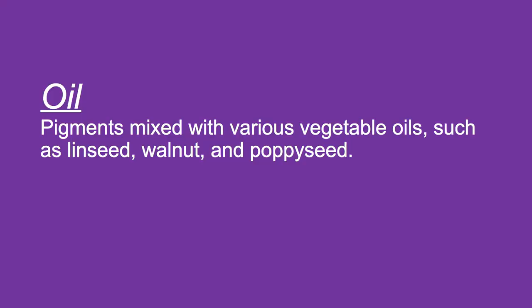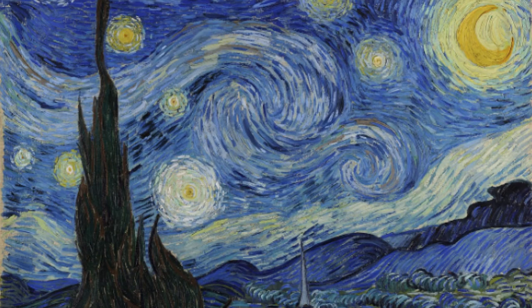The next type we hear about most is oil painting. Oils are pigments mixed with various vegetable oils such as linseed oil, walnut oil, and poppy seed oil. One technique of oil painting we touched on previously is impasto, where the artist layers the paint thickly onto a canvas — as shown here with Vincent van Gogh's 'Starry Night.' Layering very thick paint on the canvas creates actual texture on the canvas surface itself.